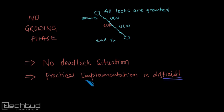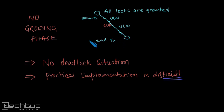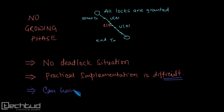If we talk about cascading rollback, this protocol doesn't address anything about commitment of the data — that is, whether the data being read is already committed or not. So in this case we can still have cascading rollback. These are the three main problems with this locking protocol.